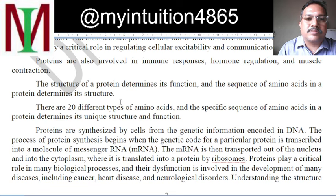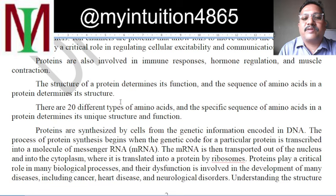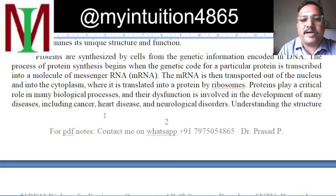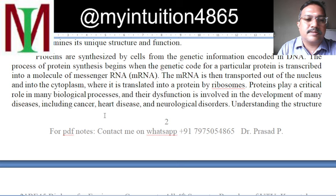It feels very complicated, but our body does it in a very simplified and easy manner. There are 20 different types of amino acids, and the specific sequence of amino acids in a protein determines its unique structure as well as its function. Proteins are synthesized by cells from the genetic information encoded in DNA. It is the DNA which gives the information, transcribed into an RNA molecule which we call messenger RNA.